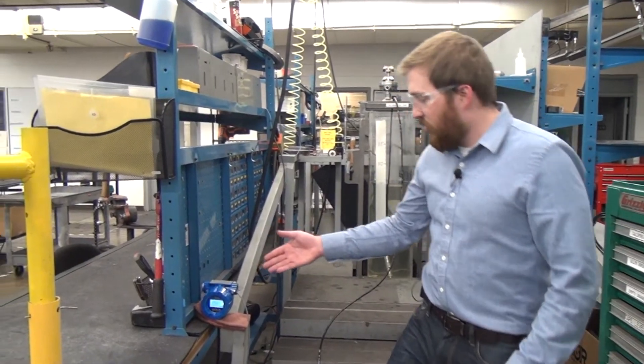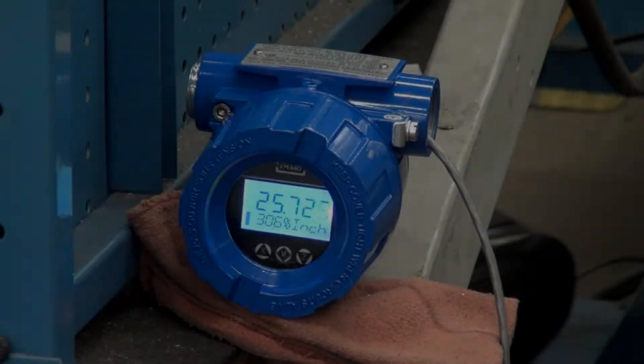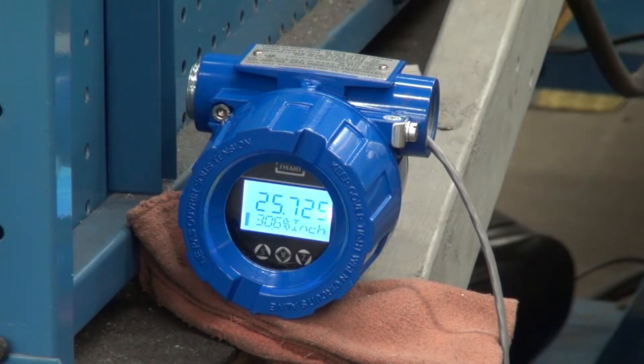If you come back here and check the remote display, you'll see that the display is showing 25 inches of water column.